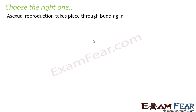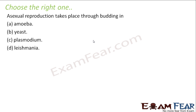Asexual reproduction takes place through budding in: amoeba, yeast, plasmodium, or Leishmania? Budding — what was budding? Let us have a quick review. Budding is when a small outgrowth appears, and that outgrowth then grows; when it becomes matured, it detaches itself from the parent body. So it happens in yeast.